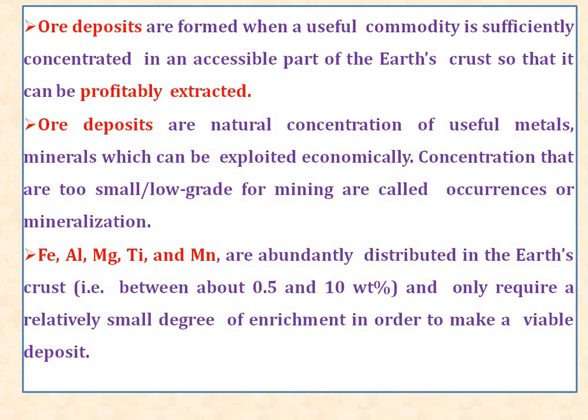Iron, aluminum, magnesium, titanium, and manganese are abundantly distributed in the earth's crust, that is between about 0.5 and 10 weight percentage, and only require a relatively small degree of enrichment in order to make a viable deposit.